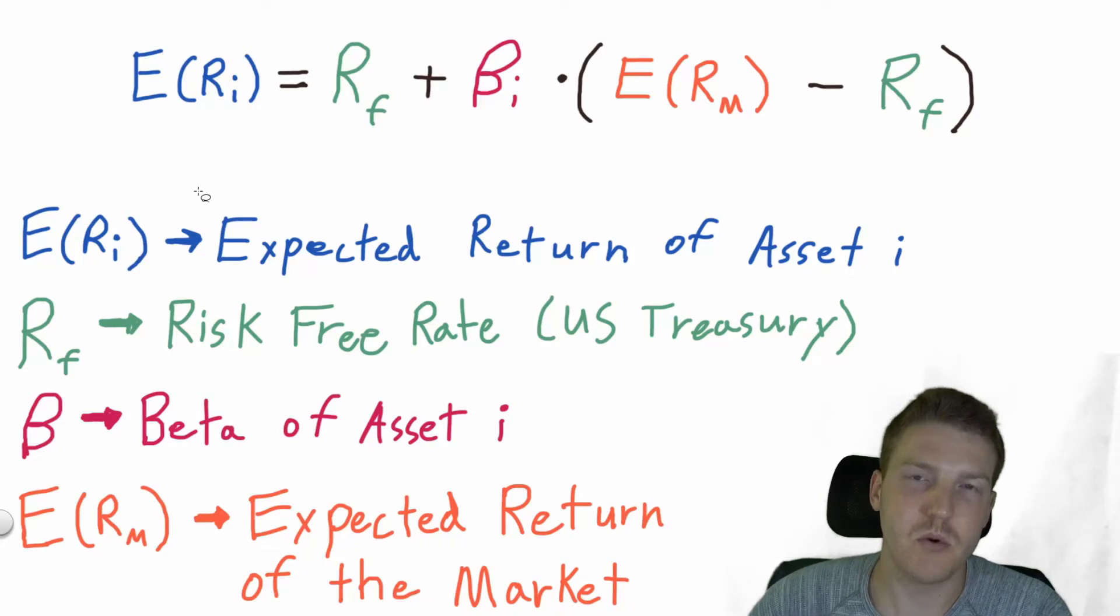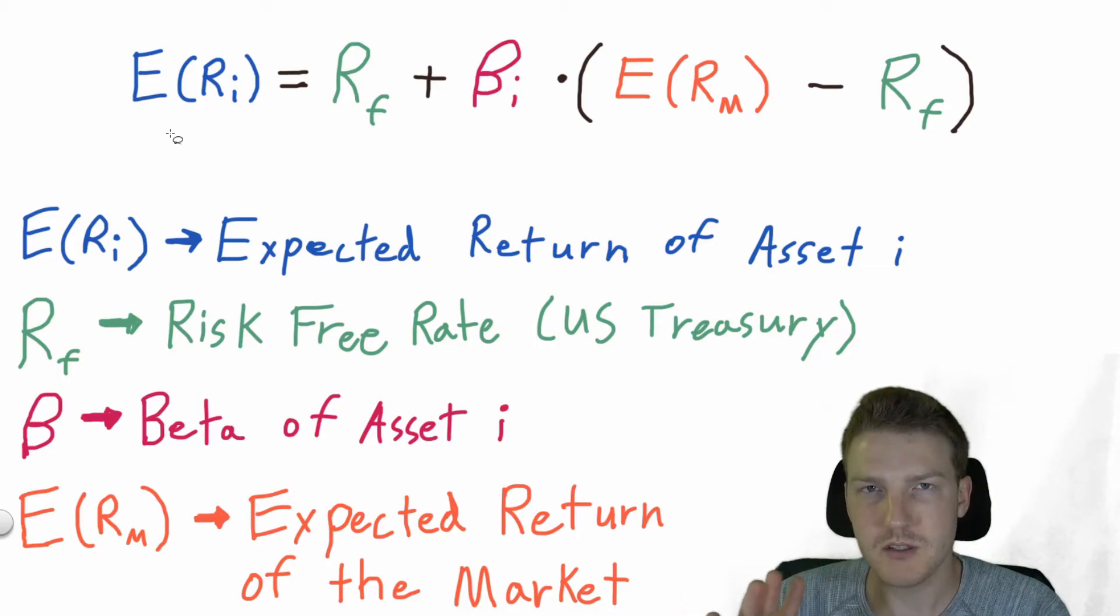Let's break down the CAPM so it's easy to understand. Here on the top of the screen is the CAPM formula. There's four variables that go into this formula, so let's go one by one so it's very easy to understand.